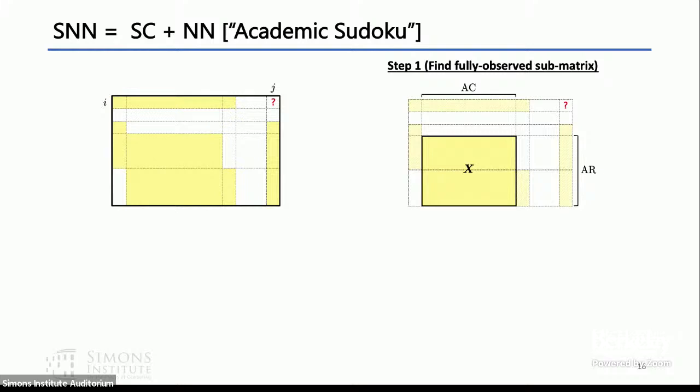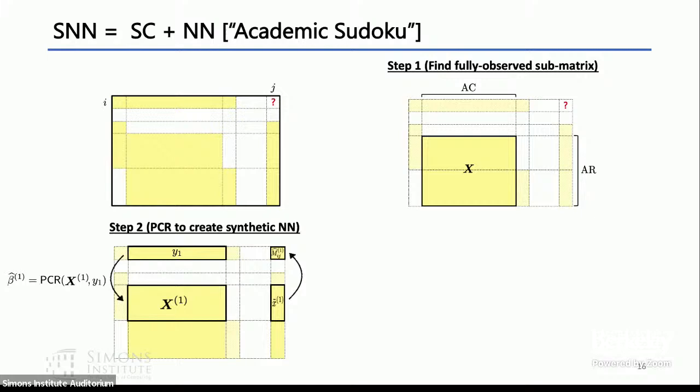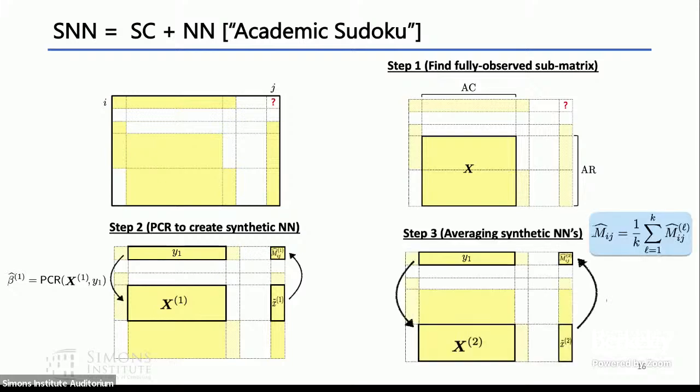Synthetic nearest neighbors is really a combination of these two ideas of synthetic controls and nearest neighbors. I like to think of it as academic Sudoku. Let's say there's some entry ij that I'd like to predict. The first step is you find this matrix x that's fully filled, such that it has a couple of properties. First, the corresponding elements in row i are completely filled, given by anchor columns ac, and the corresponding elements in column j are filled, called ar. Now if you just look at the question mark, ac, ar, and x, that looks a lot like the synthetic controls problem. That's what we're going to exploit. Now what you do is break up x into k different sub matrices. With each of these matrices, you learn a model between y1 and x1. The way we propose doing that is by principal component regression. We first do PCA on x1 to find a lower rank approximation, and then apply that to your x tilde 1 with the beta hat that you learn to get your first estimate. You repeat this process over the k different sub matrices you create, take the average, and that's your estimate for M hat ij. That's exactly the algorithm used in the simulations I just showed you. Why PCR? How to pick k? We'll talk about that in a second. Any questions about the algorithm? Simple three-step algorithm.